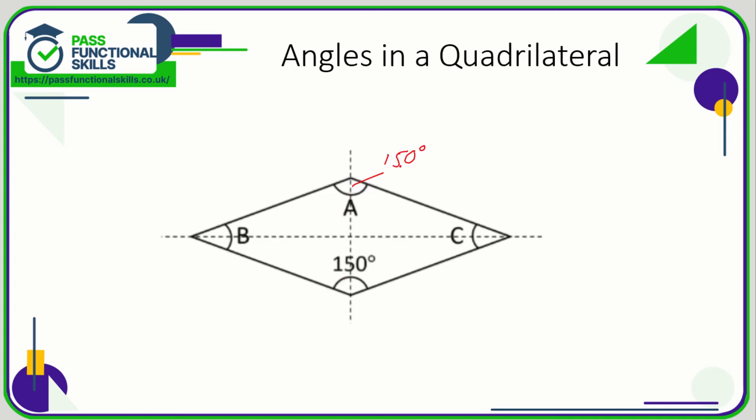So so far we have 300 degrees there, meaning we've got 60 degrees left for B and C. Now angle B and angle C are the same because we have this line of symmetry here. If we were to fold this shape here, this angle would fit perfectly on C.